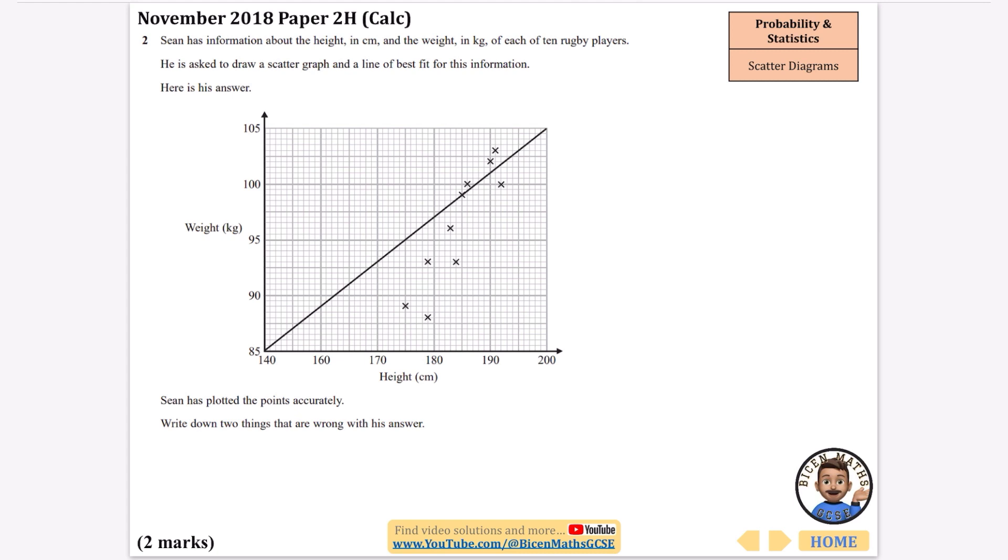Sean has information about the height in centimeters and the weight in kilograms of each of 10 rugby players. He is asked to draw a scatter graph and a line of best fit for this information. He has plotted the points accurately. Write down two things that are wrong with his answer. If I drew the line of best fit I would probably be doing a line that kind of looked like this. I'm going to say that his line of best fit is not correctly drawn. The fact I've actually drawn a correct one on the diagram shows the examiner I know exactly how to draw them.